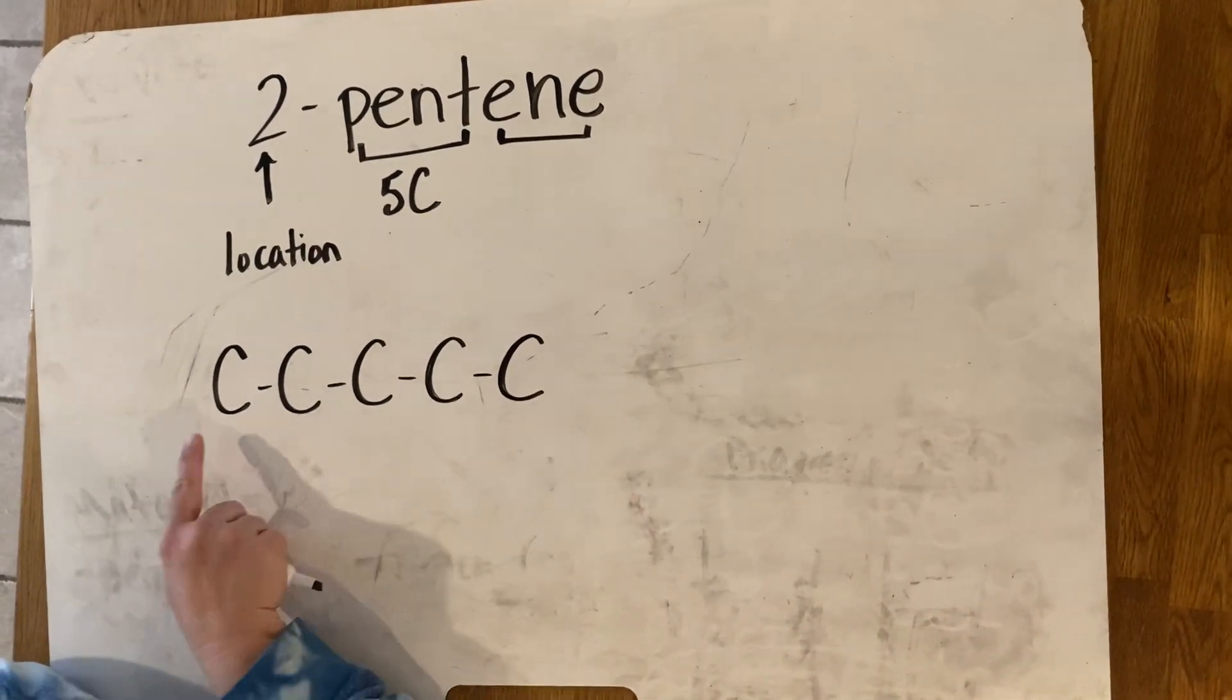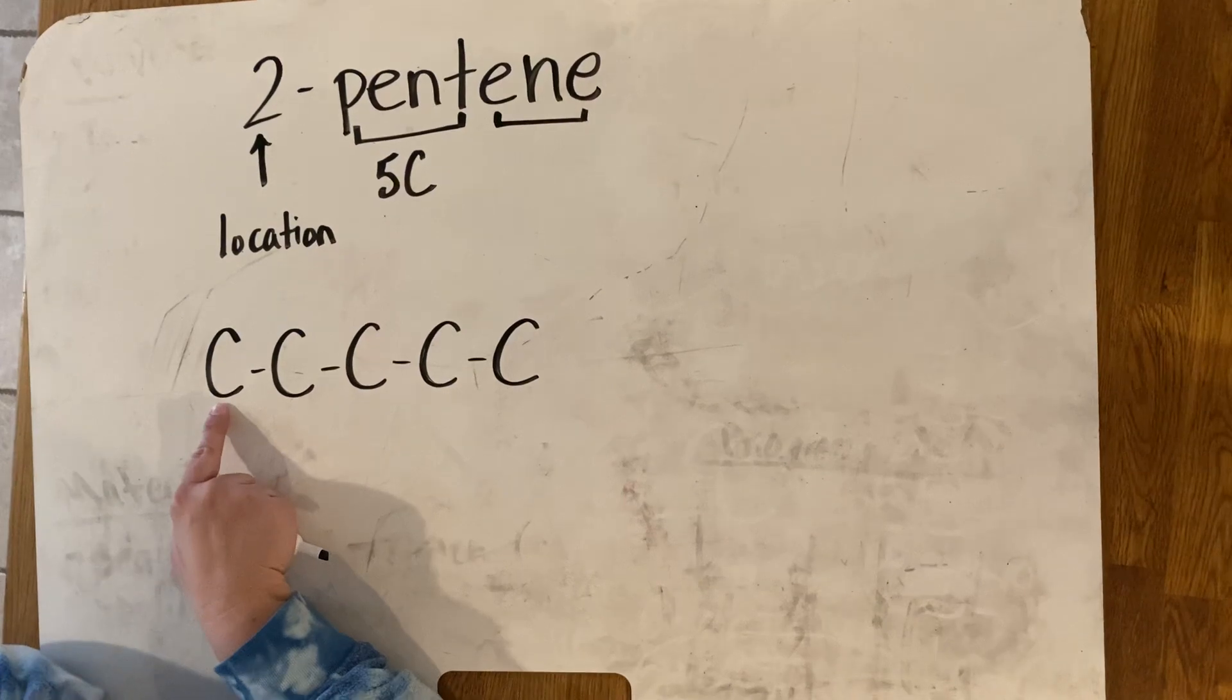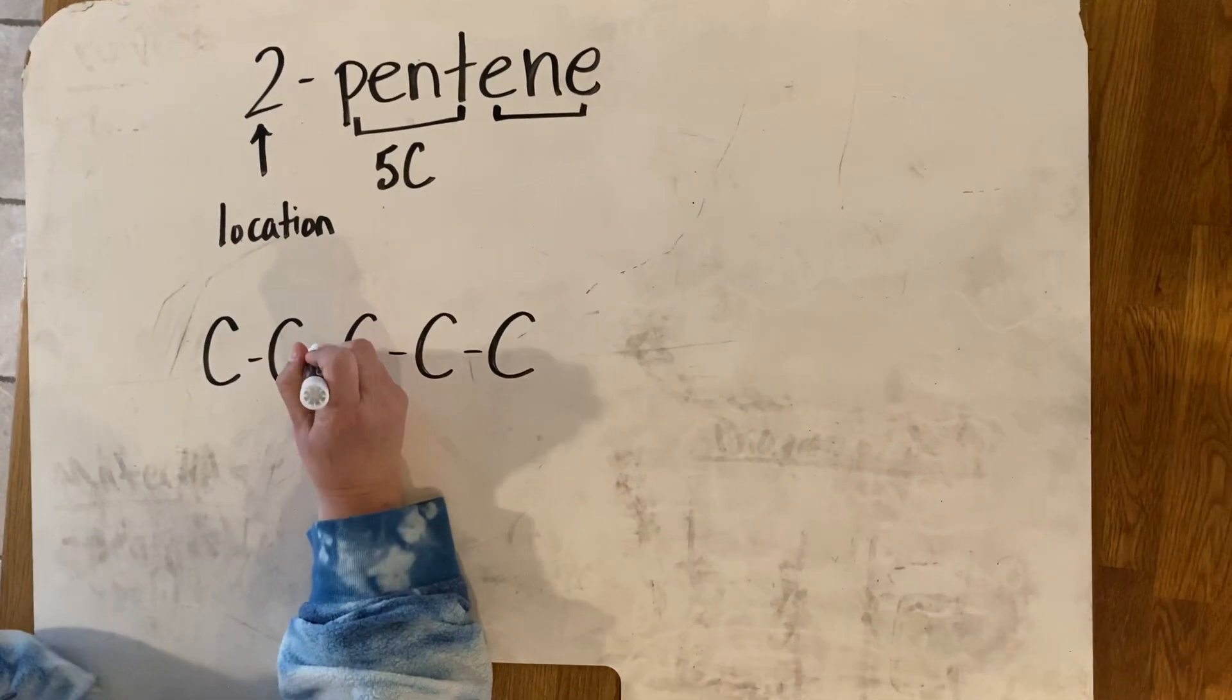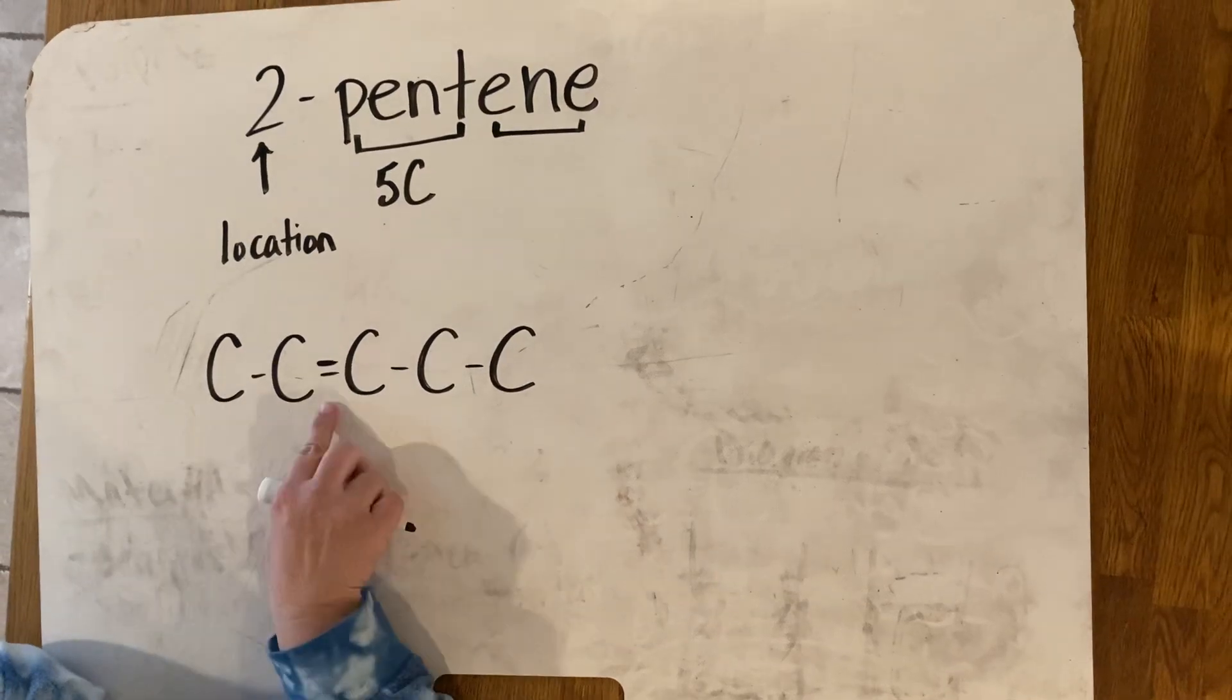If I'm drawing it, this is going to be my carbon number one. So I know that on carbon number two, the double bond must be there. So that's your carbon number two.